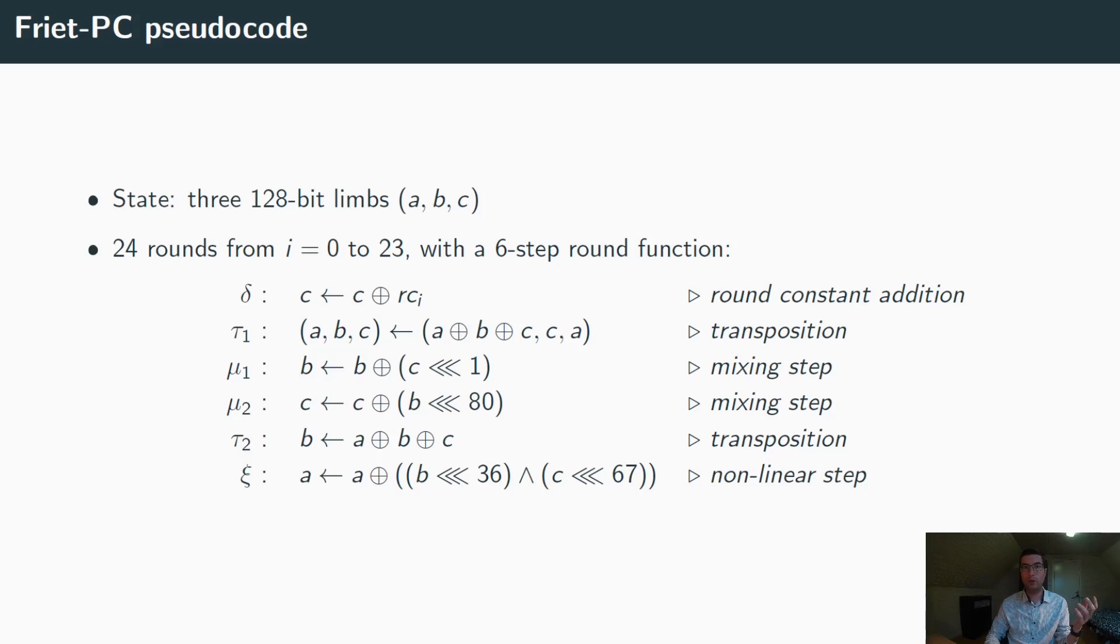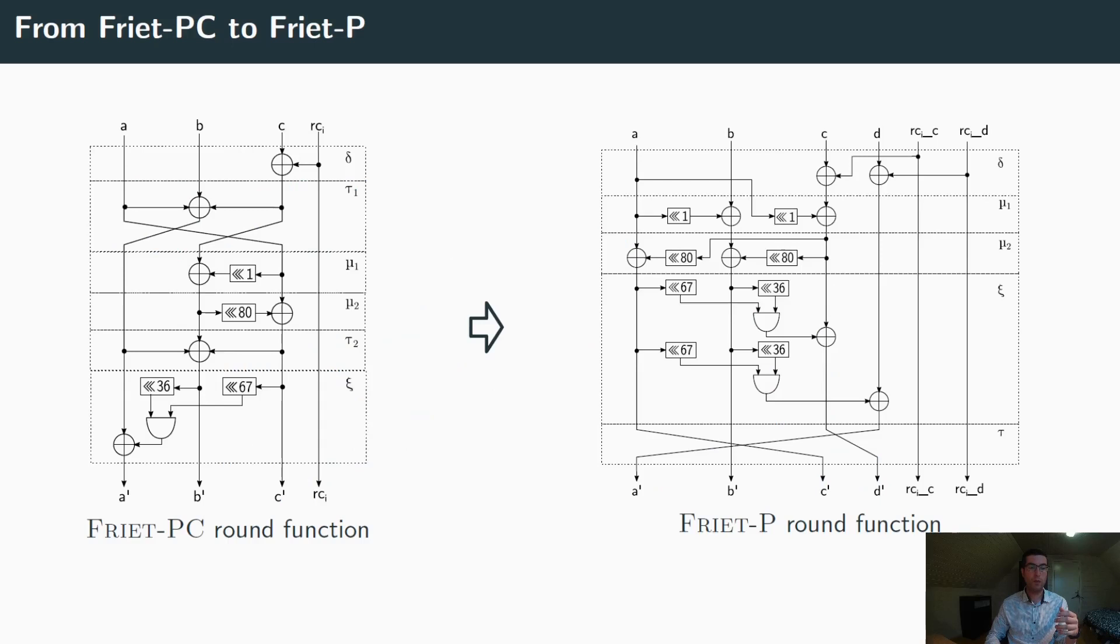The last operation of the round is xi. It is the only non-linear operation, and it adds to limb A the bitwise AND of the circular shifts of limb B and limb C by some offsets. All the circular shift offsets in the round functions were chosen in order to achieve faster diffusion.